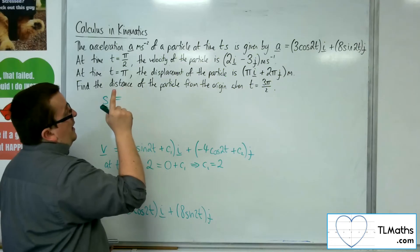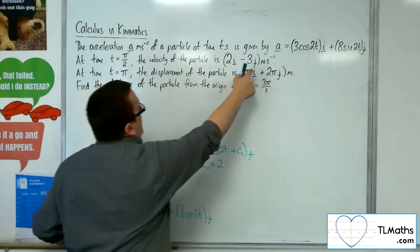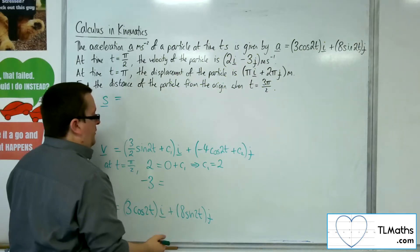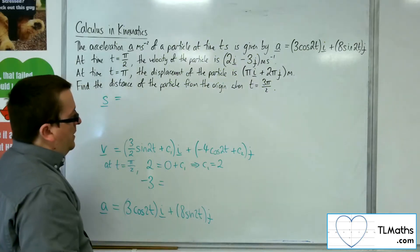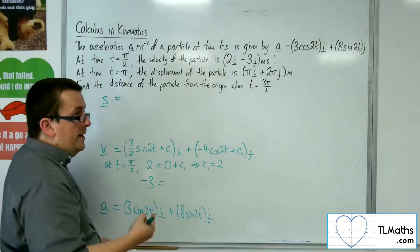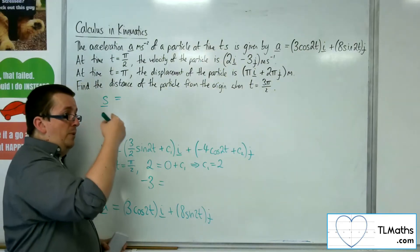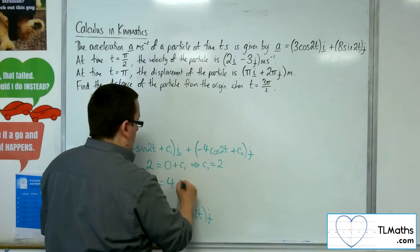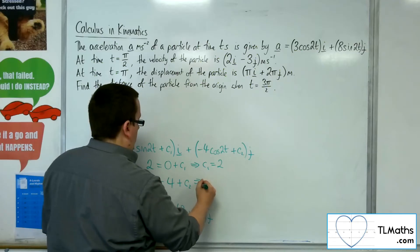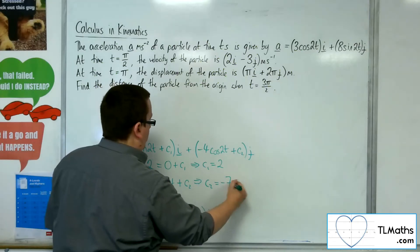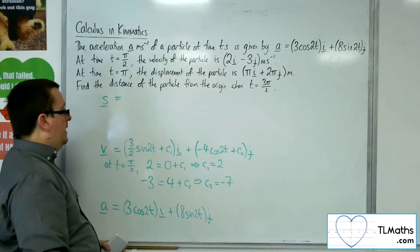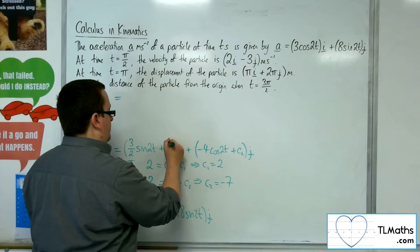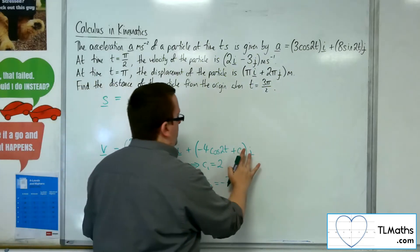The velocity is minus 3 for the j component. Substituting π/2 in, I get cosine of π. Cosine of π is minus 1, so this will be 4 plus c2. And so c2 must be minus 7. So c1 is 2 and c2 is minus 7.